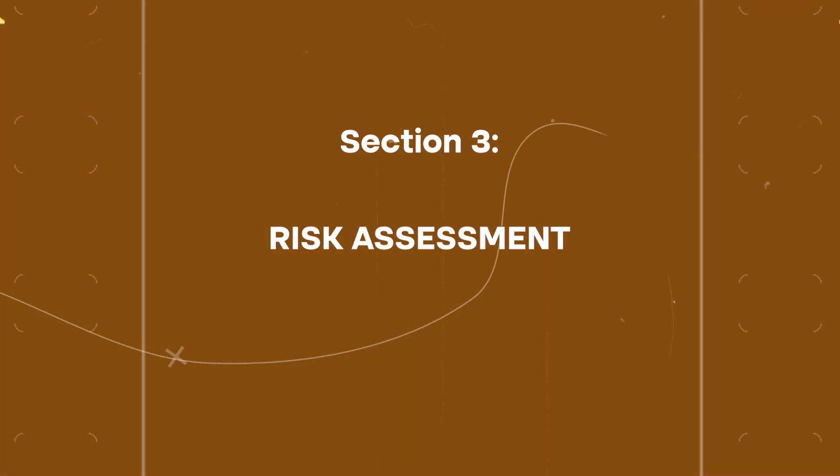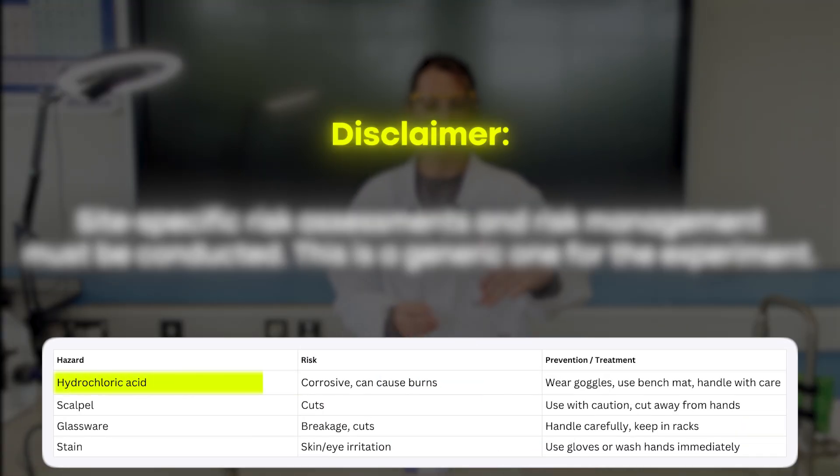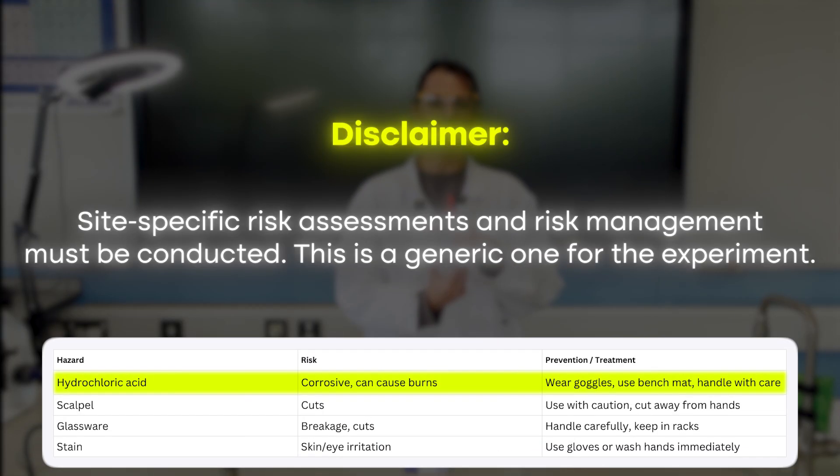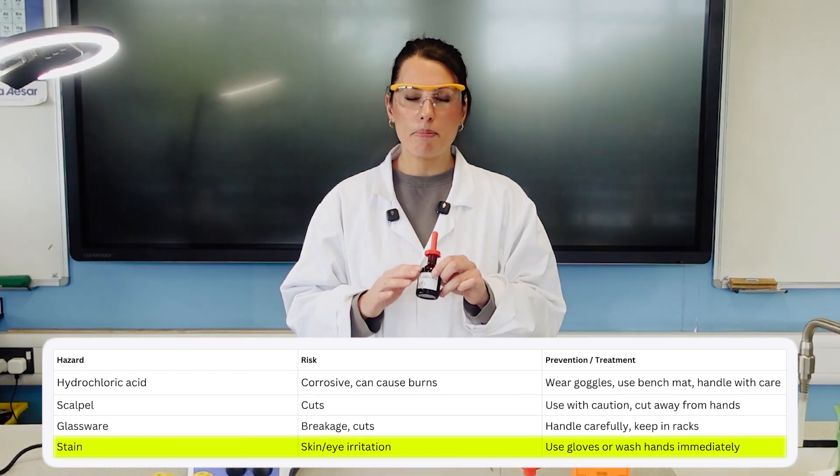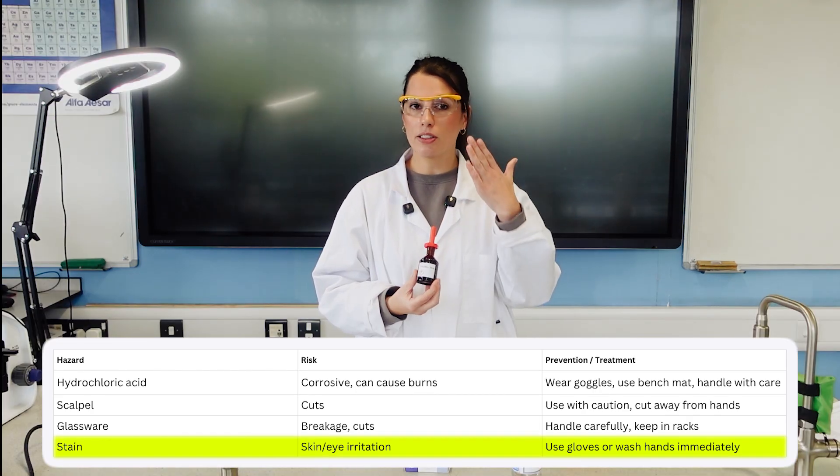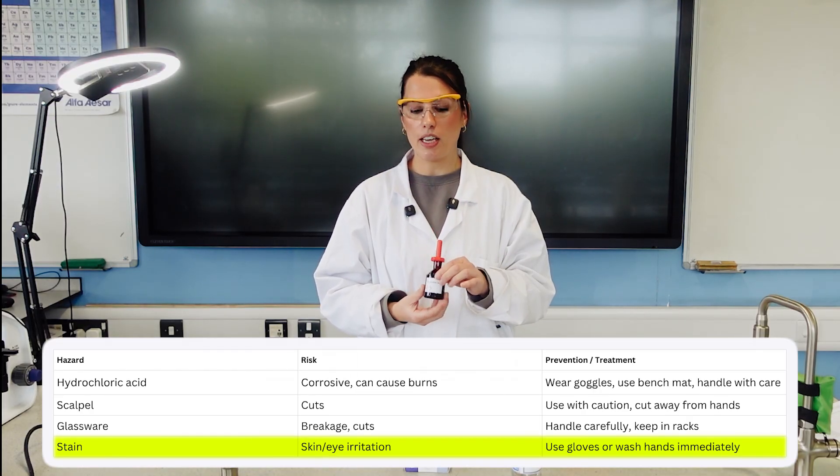The key things you need to be aware of in terms of risk assessment are we're using one molar hydrochloric acid, so you have to have eye protection on at all times. I'm actually going to be using gloves at any point when I'm using the acid as well. The stain can be an irritant, plus it can stain your skin and clothes.